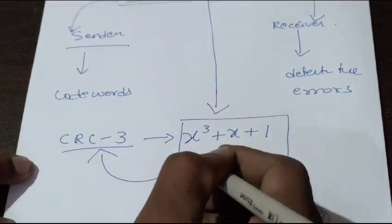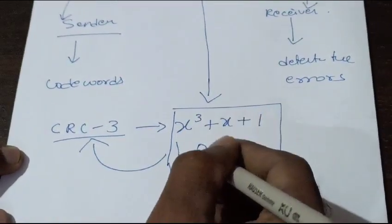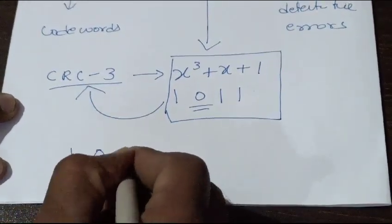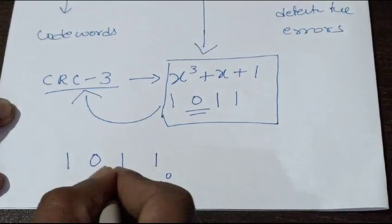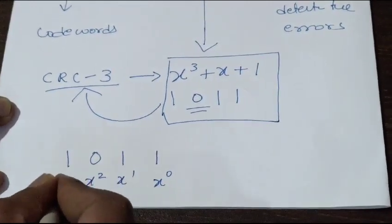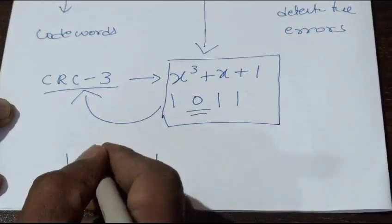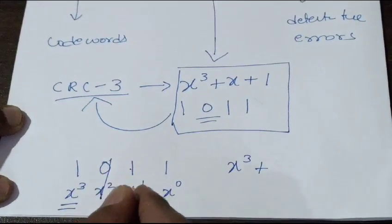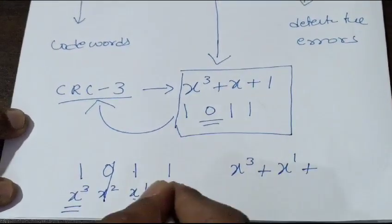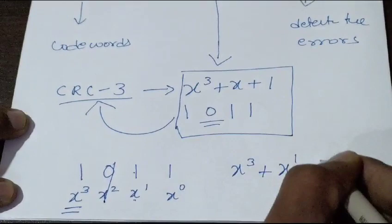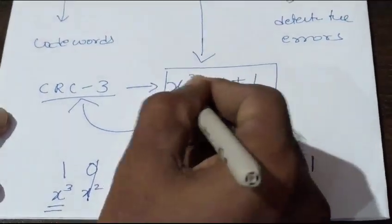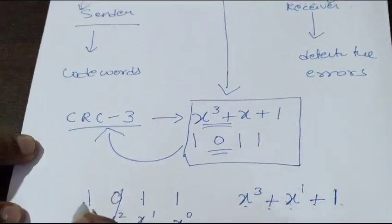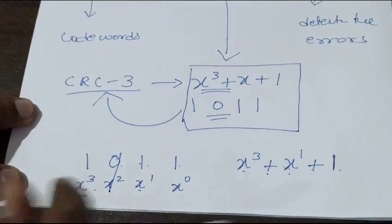If you want to know how this polynomial has been converted into binary, it is very simple. For example, we have 1011. This is x³, this is x², this is x¹, and this is x⁰. Here this zero you can neglect, so this is x³ plus x¹ plus x⁰, that is nothing but 1. So that's x³+x+1. In binary it is 1011.